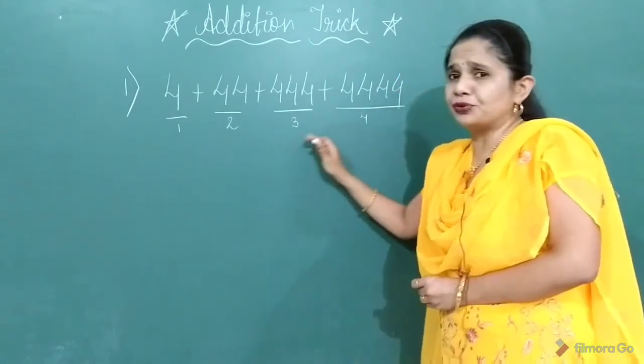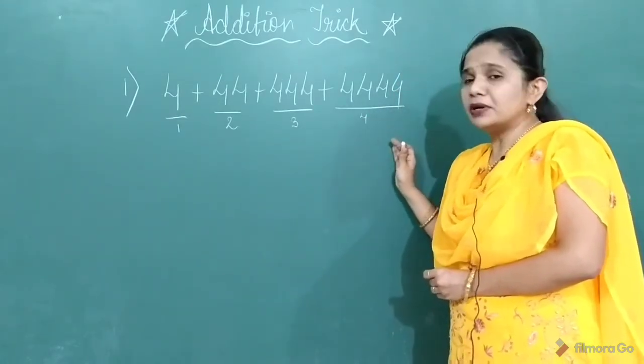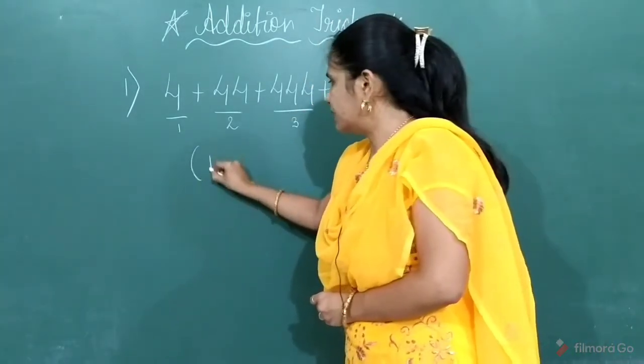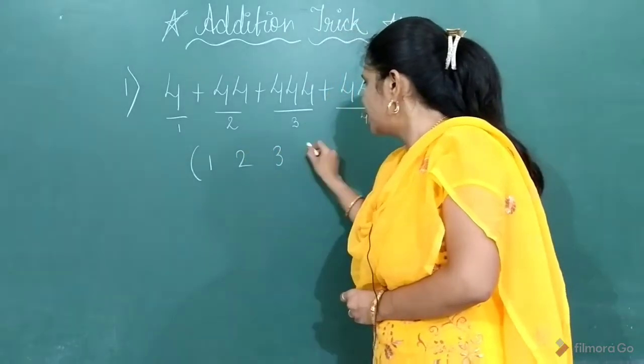Now you have to adjust these numbers in increasing order. So I will write down in the bracket 1, 2, 3, 4.